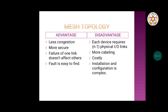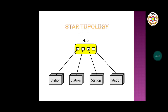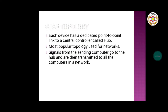Another type is star topology. In this topology, each station is not connected directly to each other but is connected to a central hub. Unlike mesh topology, there is no dedicated one-to-one connection between devices — each station or device connects to the hub. Information is sent to the hub first, and the hub then forwards it to the destination device. Each device has a dedicated point-to-point link to the central controller called the hub.